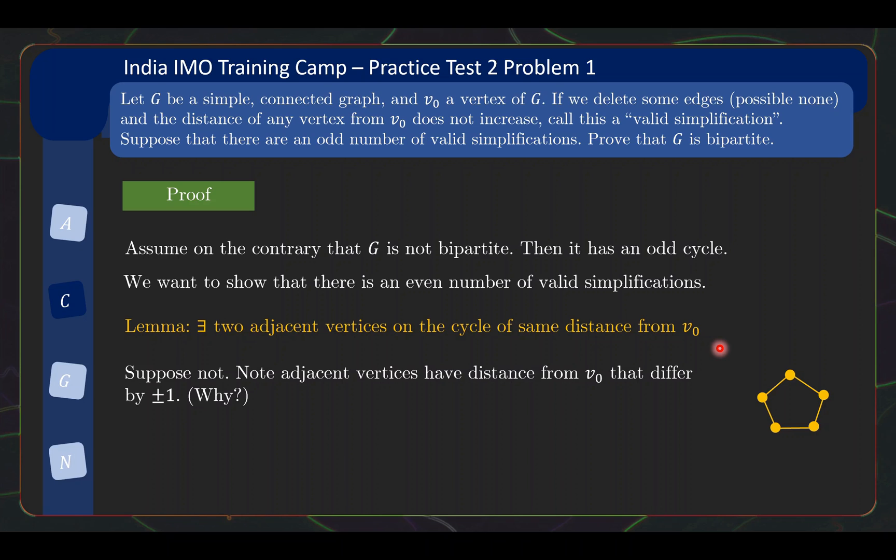So we assume on the contrary that we do not have such adjacent vertices. Then what we notice is that the adjacent vertices must have distance from V0 that differ by at most one. This is a basic piece of observation from graph theory, because if you have V0 connect to here, we can take this path and reach the adjacent vertex. So the distance of this adjacent vertex is at most one more than the distance of this. And conversely, if we have a path to this vertex, you can take the edge up and reach this other vertex. So the distance of this vertex is at most one more than the distance of this vertex from V0. So by combining the two directions, the distance from V0 must differ by at most one. And we assume on the contrary that they are not identical. So they just differ by one.